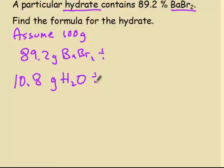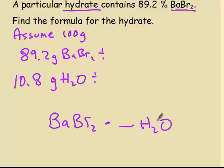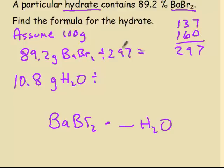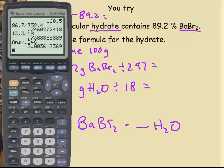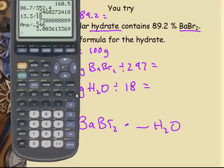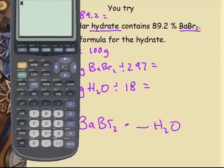Now we have grams. Find moles. Find the ratio. We're trying to find the ratio of moles between barium bromide and water. We need a molar mass again. Barium is 137.3, we'll just leave it at 137. Bromine is 79.9 times 2, let's just say 160. Water is 18. I have 89.2 divided by 297, 0.3003. 10.8 divided by 18, I get 0.600.